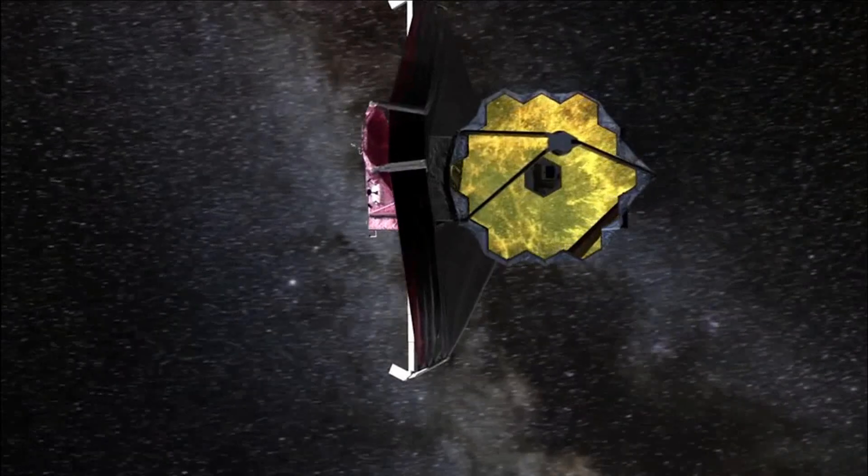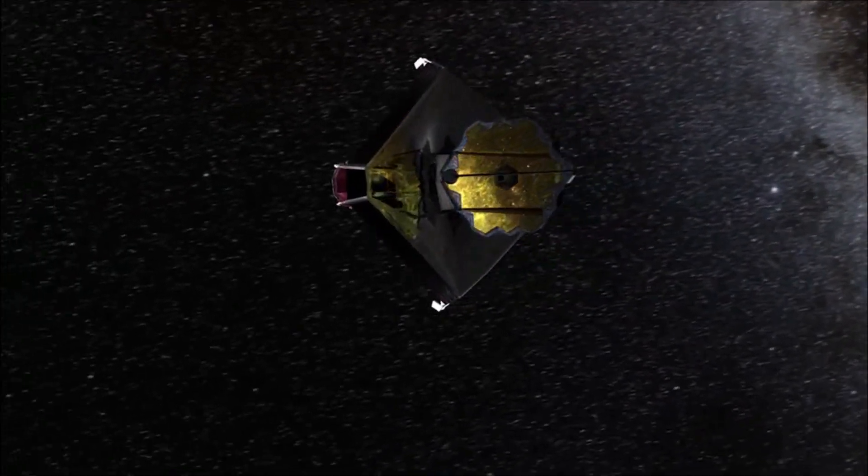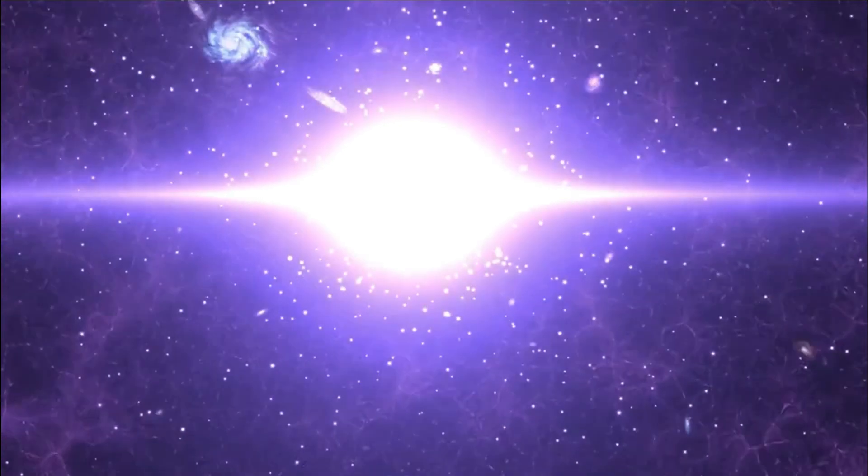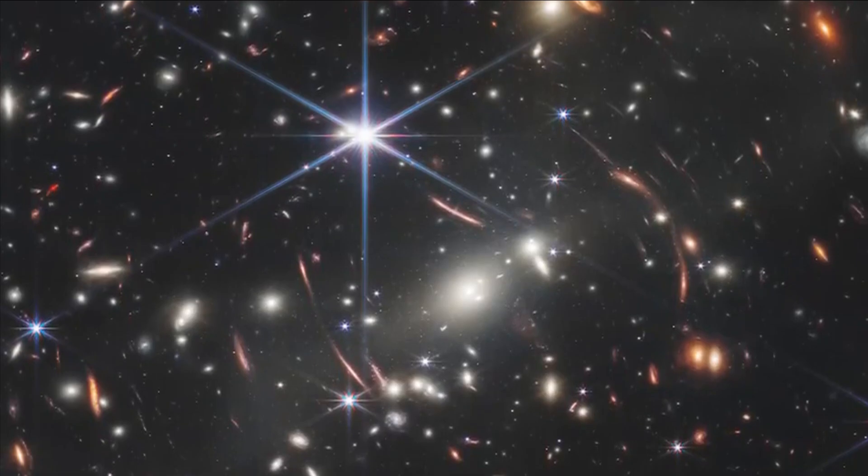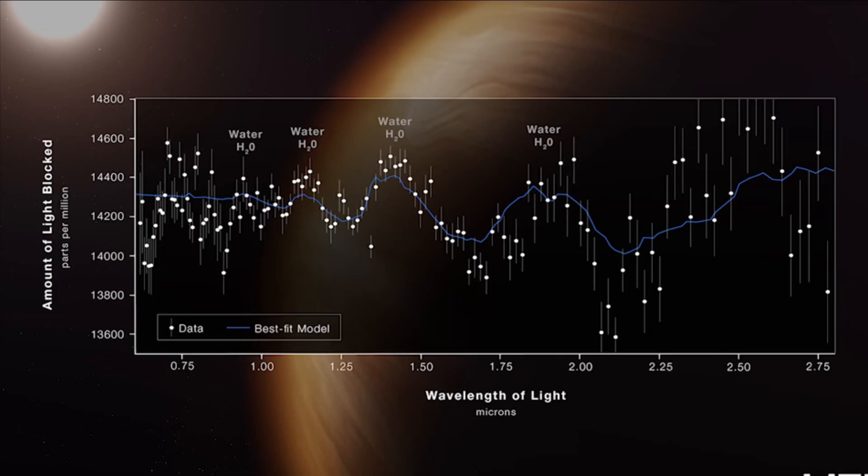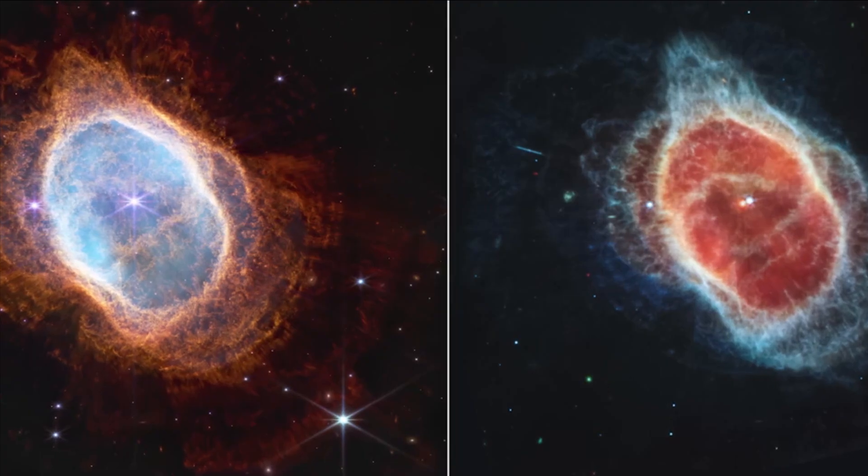This remarkable telescope unveiled multiple images of the exoplanet named HIP 65426-b, a colossal gas giant surpassing Jupiter in size and positioned approximately 385 light-years away from Earth. The telescope utilized various tools to capture these captivating images.